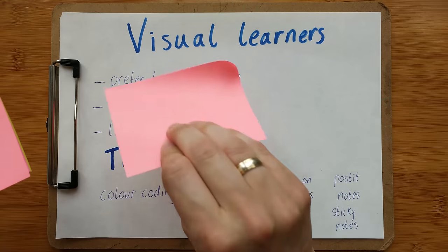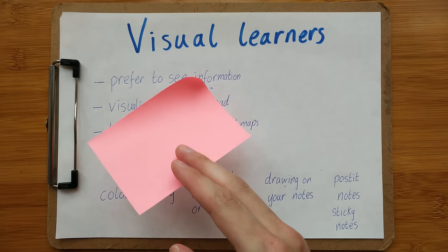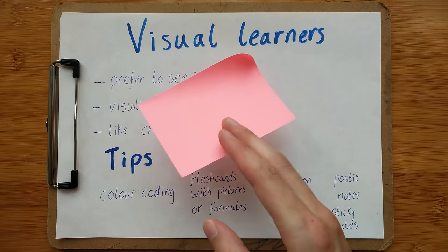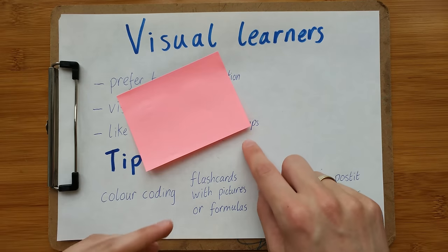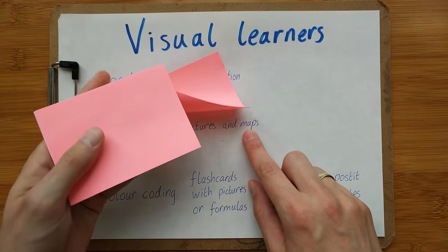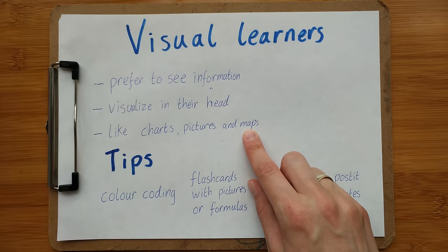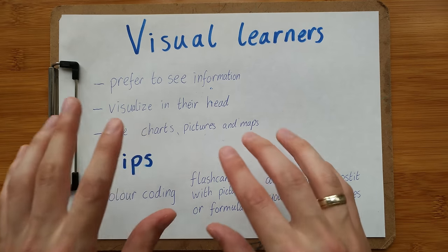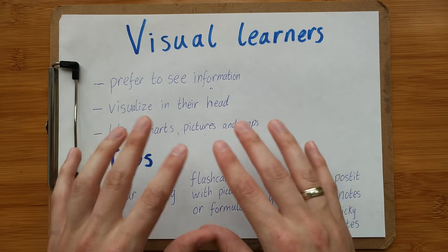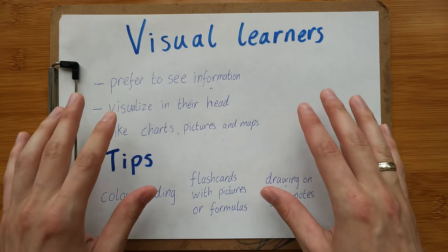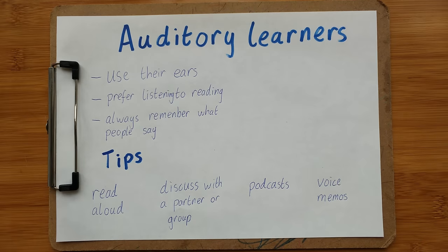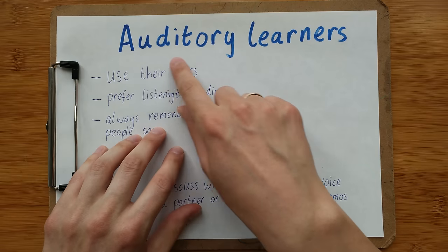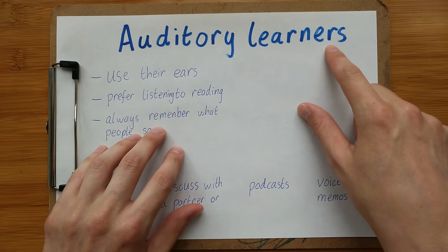You can peel the post-it off and stick it anywhere — in your house, on your desk, or in your book. You can make a map with these post-its and it will help you remember the important things and visualize them. Okay, let's look at the next one.